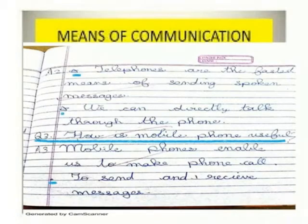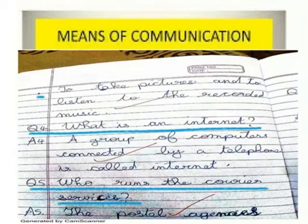Question 3: How is mobile phone useful? Mobile phone enables us to make phone calls, to send and receive messages, to take pictures, and to listen to recorded music.